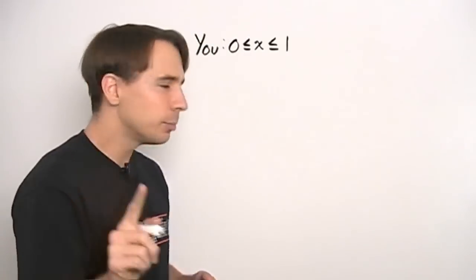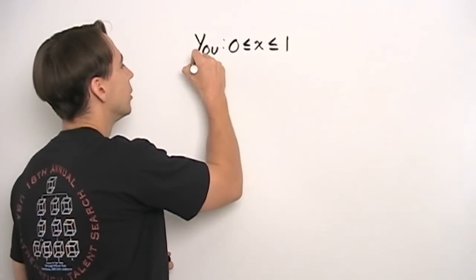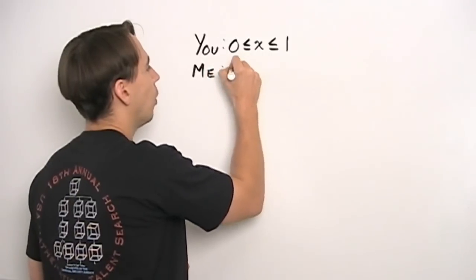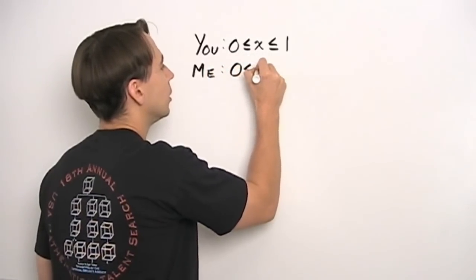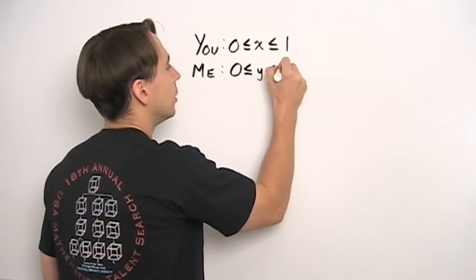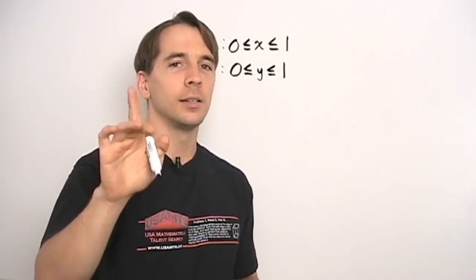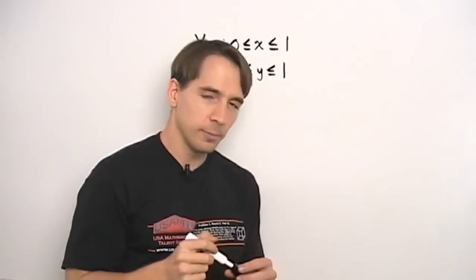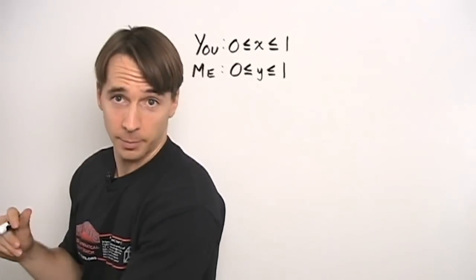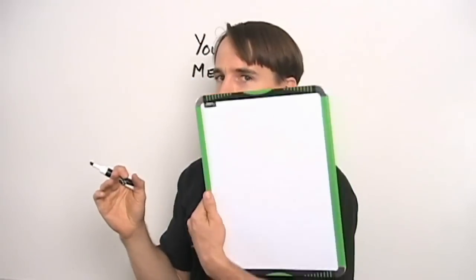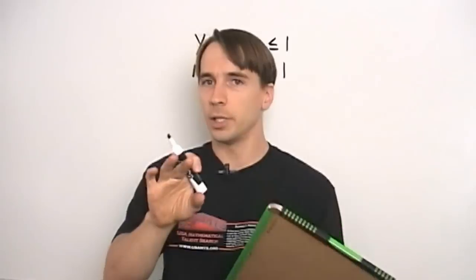And I'm going to do the same thing — I'm going to pick a number from 0 to 1. While your number's called x, mine's going to be called y. So we're going to pick the numbers and write them down this time. You write your number down — don't show it to me yet. I'm going to write my number down.